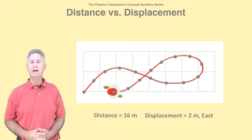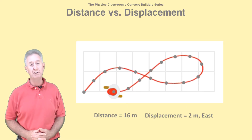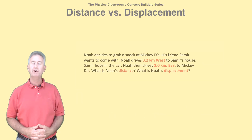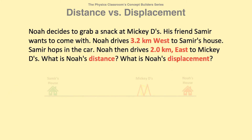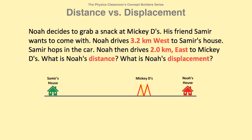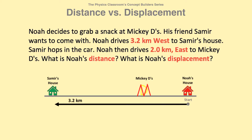Whenever there's a change in direction, there's a difference in numerical value for distance and displacement. To further illustrate the difference, consider this back-and-forth motion. Noah decides to grab a snack at Mickey D's. His friend Samir wants to come along. Noah drives 3.2 kilometers west to Samir's house. Samir hops in the car, then Noah drives 2.0 kilometers east to Mickey D's. What is Noah's distance, and what is Noah's displacement?